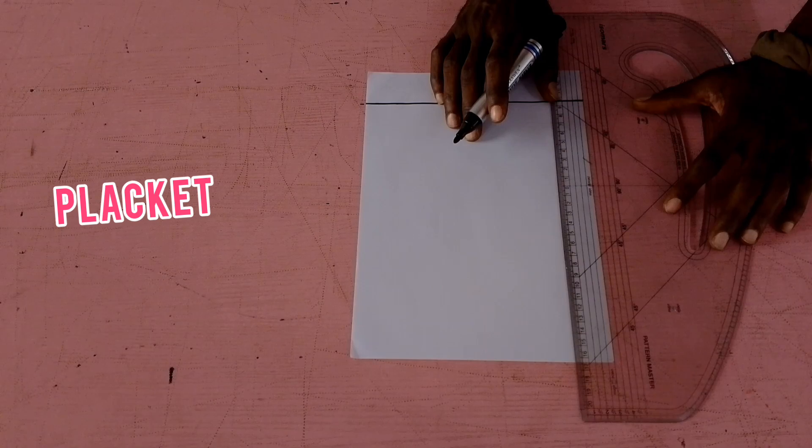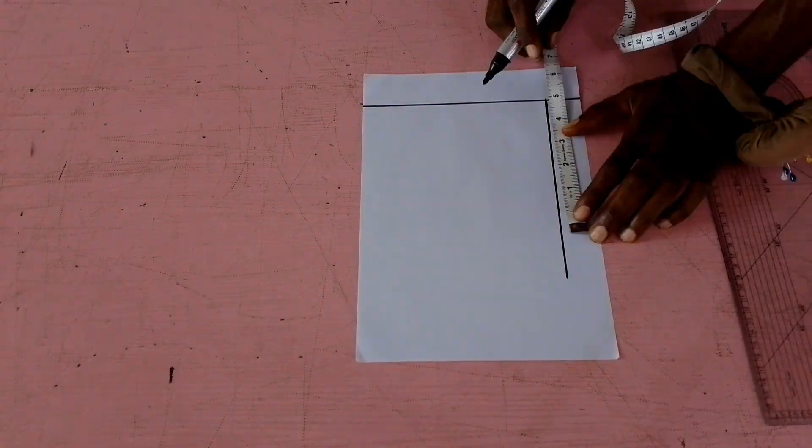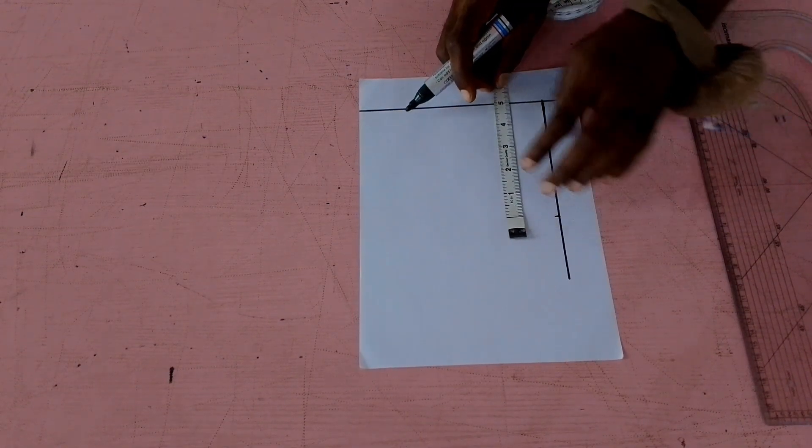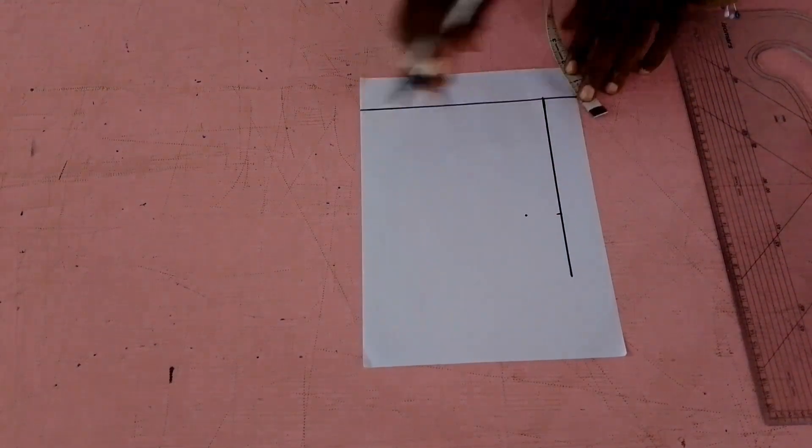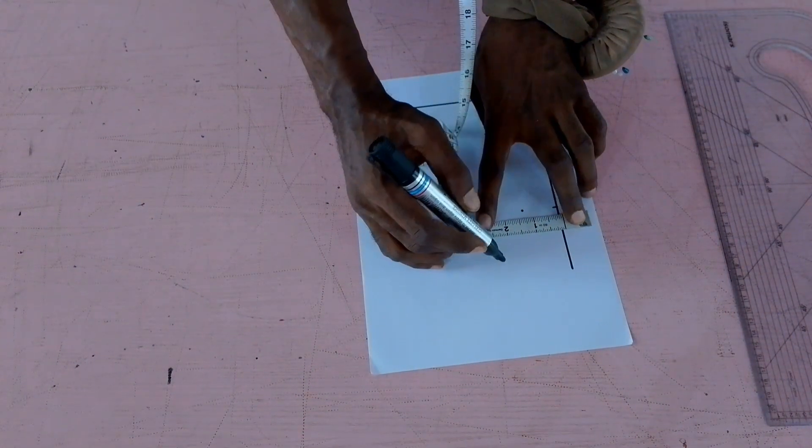To start with the placket, we're going to draw a perpendicular line. After drawing the perpendicular line, mark five inches height and then mark two inches width for the width of the placket.